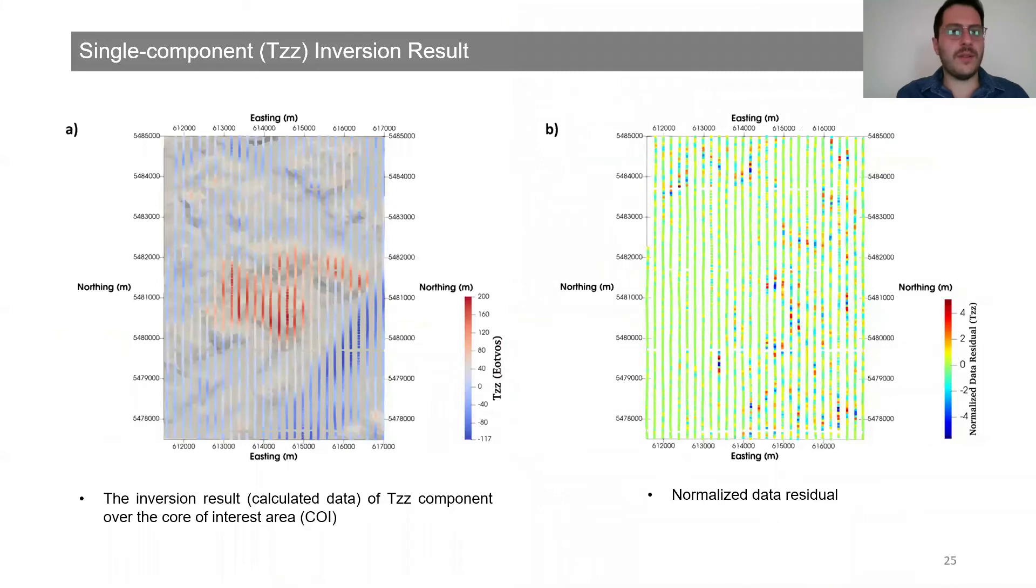Now we are going to look at the inversion results of the gravity gradiometry data. We start the inversion with the Tzz component. As I mentioned earlier, this is the component that's most related to subsurface geology. From figure A, we can see the calculated data of the Tzz component. As we recall our observed data, the shape of the observed data and the calculated data can be seen consistently. Figure B shows the normalized data residual map. This is essentially the differences between the observed and calculated data. If we look at the scale here, zero represents the green color, which means that we had agreement between the observed and calculated data.